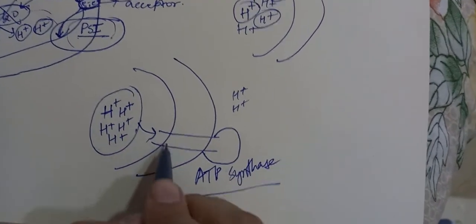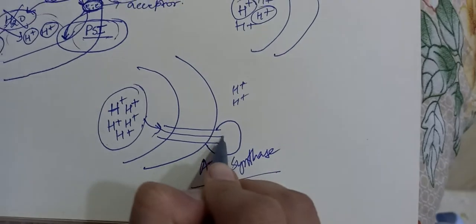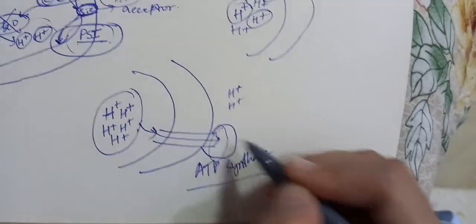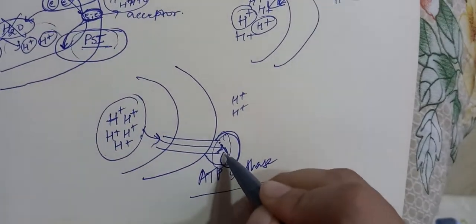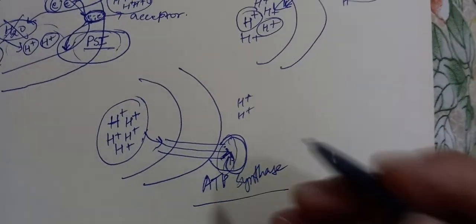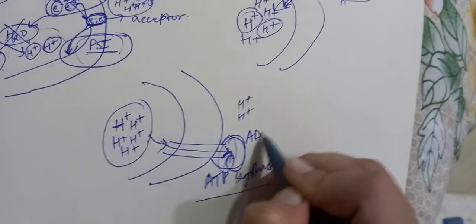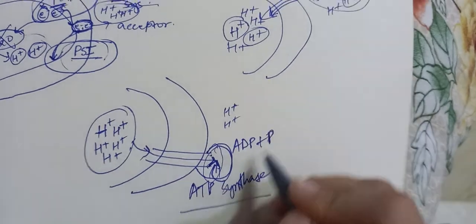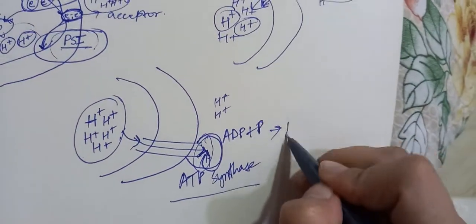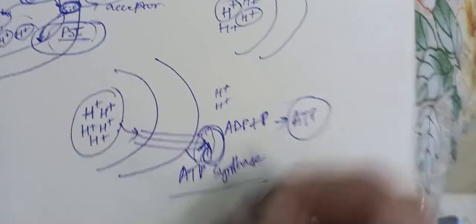These protons will move out and they will rotate this ATP synthase, and due to which energy is produced. ADP gets phosphorylated and ATP is produced.